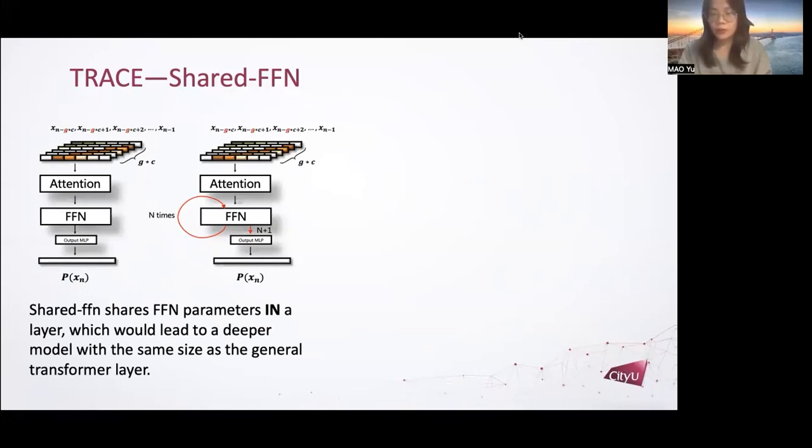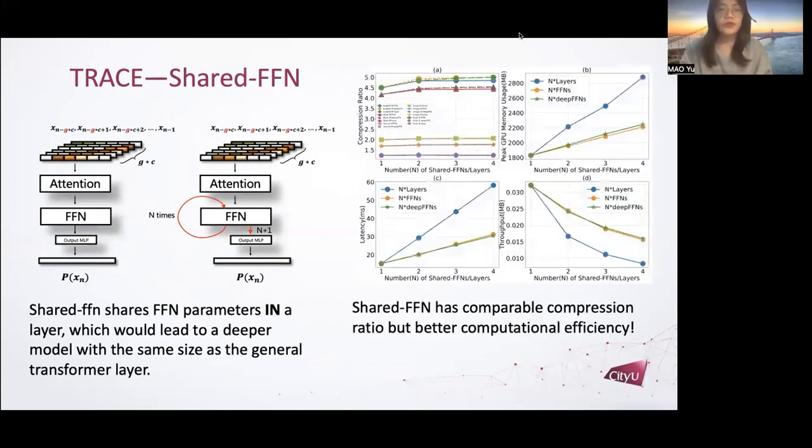Thus, we propose a shared FFN that shares parameters in a layer, which will lead to a deeper model with the same size as the general transformer layer. Left figure shows a typical transformer layer architecture, and the right figure shows proposed technique. The output of shared FFN will return to the same FFN for n times before feeding into next layer. The experimental results show that shared FFN has comparable compression ratio but better computational efficiency.